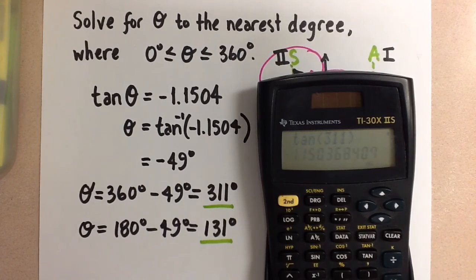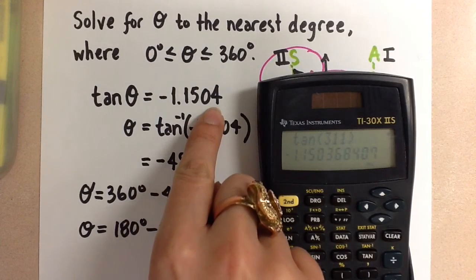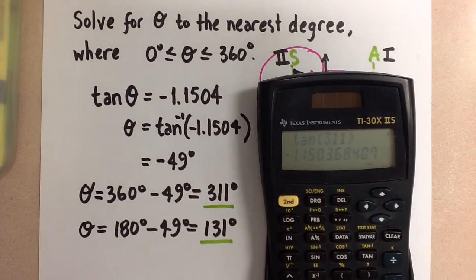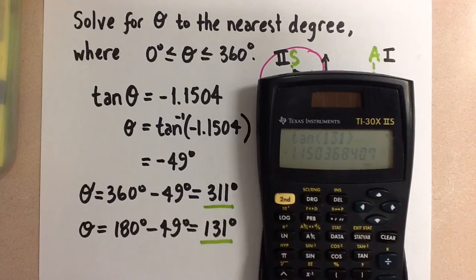And there's our answer there, which matches this right side of the equation. So we know that one's correct, and we can check the other one as well. We're going to do tangent of 131 degrees. And there we are again.